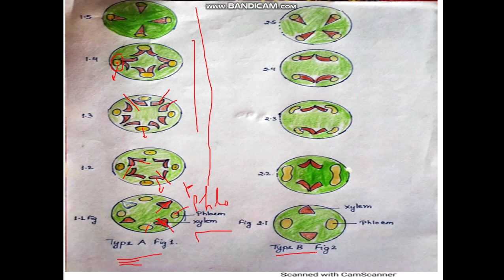Type B — the example is Cucurbita, and it is found in Phaseolus as well. In Type B, both the xylem and phloem strands form branches. You can see the phloem is dividing and the xylem is also dividing. The phloem goes laterally, and afterwards the lateral branches of xylem and phloem both join each other. After this, the result is a conjoint vascular bundle, transitioning from the original radial vascular bundle.